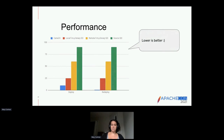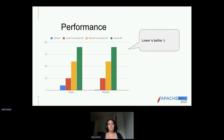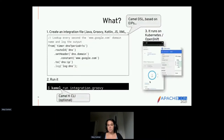When we look at performance of Camel K, deployment is much quicker and redeployment is even quicker after that. The green is source-to-image — taking code from your laptop, building it, creating an image, and putting it in a Kubernetes cluster. Yellow is taking a binary like a jar file already built on your local machine. Red is if the jar file was already up in the cloud, localized to the cluster. And then Camel K is lower across the board.